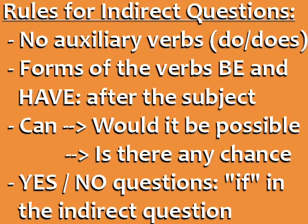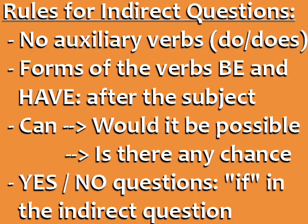Let's review the rules for indirect questions. Indirect questions have no auxiliary verbs like do, does, or did. In indirect questions, forms of the verbs be and have come after the subject. For questions beginning with the word 'can,' we change it to 'would it be possible' or 'is there any chance' in the indirect question.